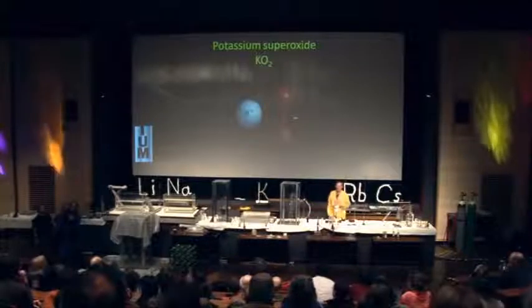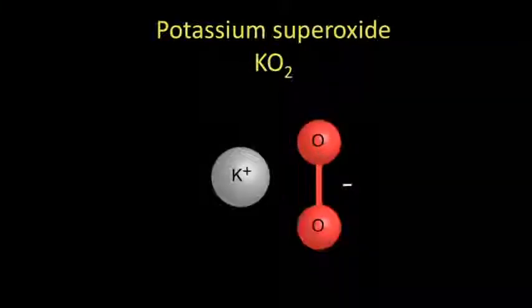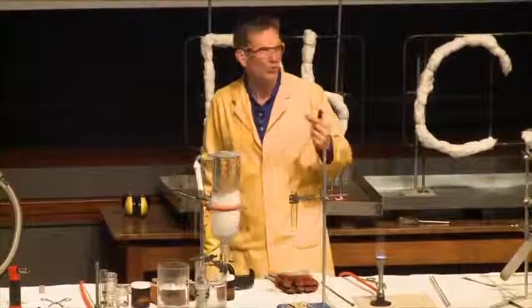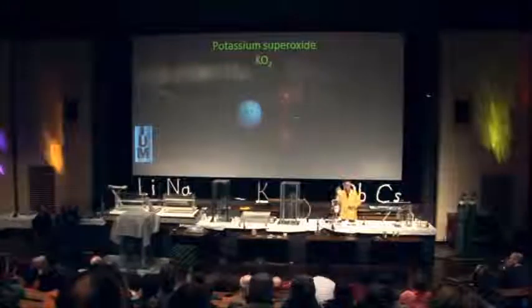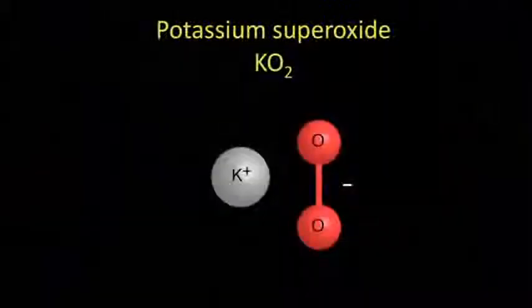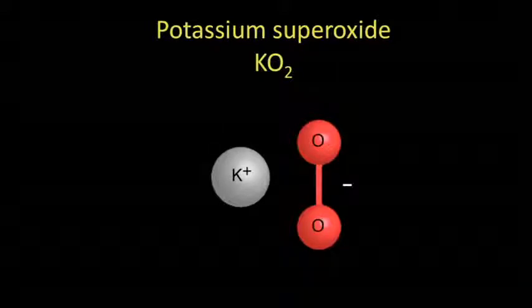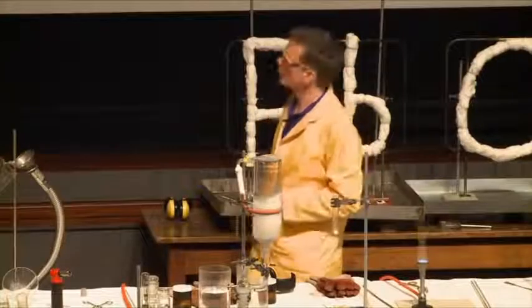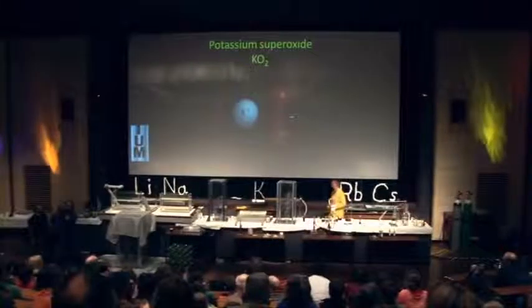Potassium superoxide has one potassium ion — the potassium has given up its electron. But now it has given up its electron to just a normal molecule of oxygen, O₂. So we actually have O₂ with one negative charge shared out over both of the oxygens. This is the unit we have in potassium superoxide: one potassium to two oxygens.